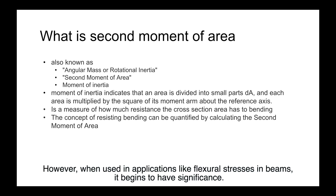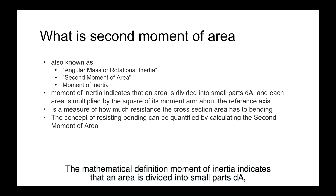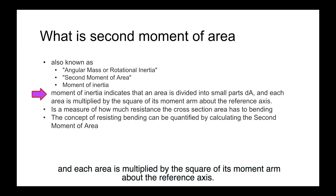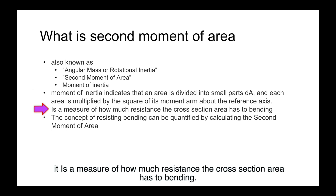However, when used in applications like flexural stresses in beams, it begins to have significance. The mathematical definition of moment of inertia indicates that an area is divided into small parts dA, and each area is multiplied by the square of its moment arm about the reference axis. It is a measure of how much resistance the cross-section area has to bending.